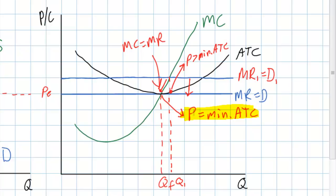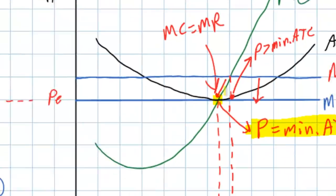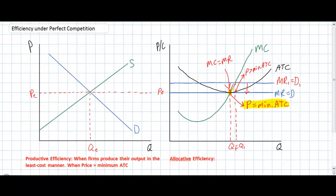All perfectly competitive firms will achieve productive efficiency in the long run due to the nature of competition itself. Low barriers to entry mean that any time firms earn economic profits and produce at a productively inefficient level, new firms will be attracted to the market, forcing the price back down and forcing existing firms to increase their productive efficiency until they achieve their minimum average total cost. At this point there is no way for the firm to become more efficient — it is producing at its lowest possible average total cost.